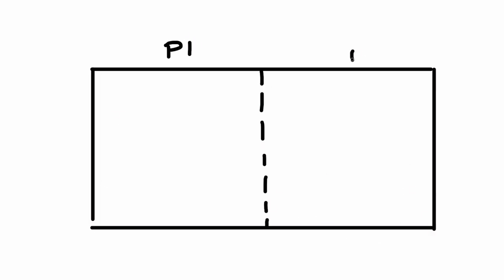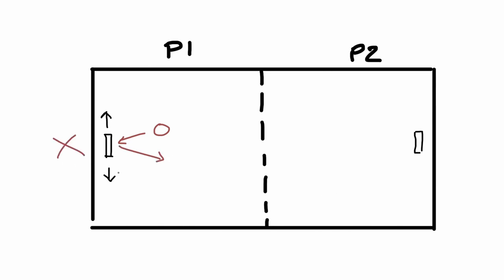The concept of Pong is pretty simple. You have two players that each control a paddle and each have one half of the screen. These paddles can only move up or down, and the goal, just like in real table tennis, is to hit the ball going through the field so that it doesn't get behind you, and instead exits the screen at the other end behind your opponent. If you do manage to get the ball out behind your opponent, you get one point and the ball resets in the middle.